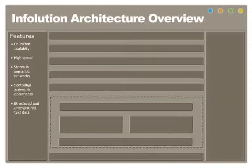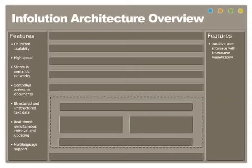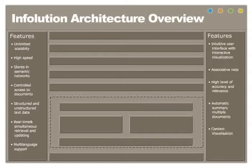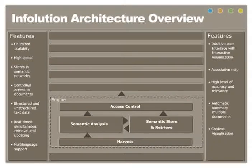InFolution is solving information complexity by deploying Web 3.0 search and retrieval technologies. A powerful semantic search engine is the core of the system. There are four major components: harvest or gathering of data, semantic analysis, semantic storage and retrieval, and access control.